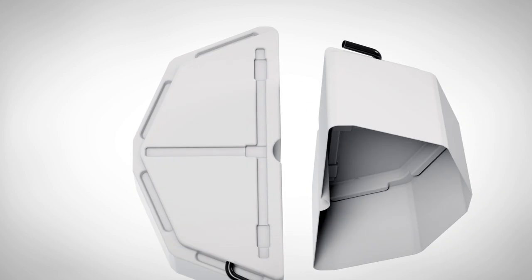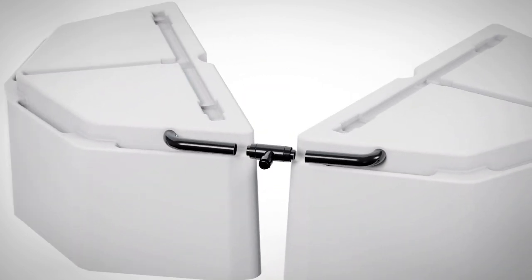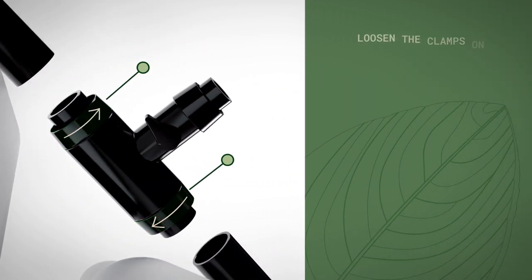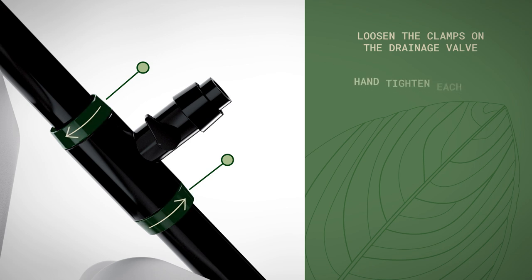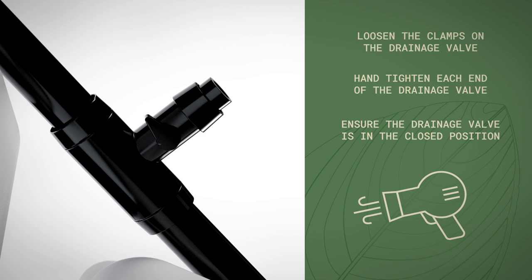Turn the tanks over and align them to connect with the drainage valve. Connect the three-fourths inch vinyl tubing attached to the back of both tanks to the drainage valve. Loosen the clamps on the drainage valve, then hand tighten each end of the drainage valve around the three-fourths inch vinyl tubing and ensure the drainage valve is in the closed position. A hair dryer can be used to soften the tubing if you're having a difficult time attaching the tanks properly.